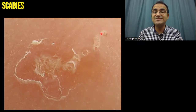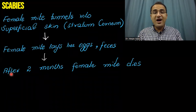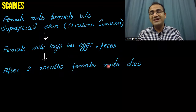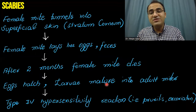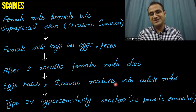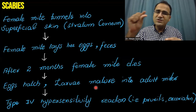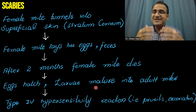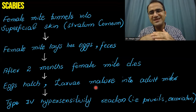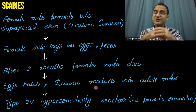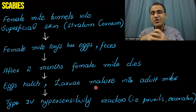After about two months, the female mite dies within the skin. The eggs hatch, the larvae mature into adult mites, and the feces, the decomposed parts of the female mite, eggs, and larvae all create a type 4 hypersensitivity reaction in the skin, causing the patient to itch.